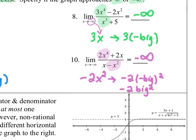In number ten, I look at my dominant terms — 2x to the 4th over negative x squared — which simplifies into negative 2x squared. I imagine a negative number plugging in for x. Negative 2 times a negative number squared: squaring the negative turns it positive, so I have negative 2 times a positive big number, which turns it back to negative. The answer is negative infinity.